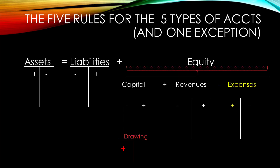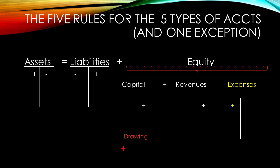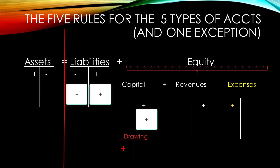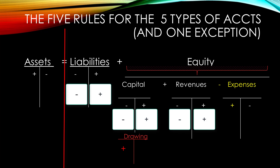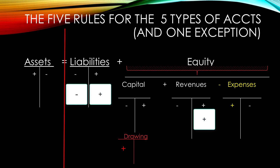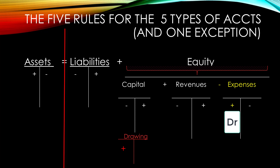Let's review. Assets are increased with debits and decreased with credits. Capital is increased with credits and decreased with debits. Revenue is increased with credits and decreased with debits. On the other hand, expenses make the equity umbrella go down.